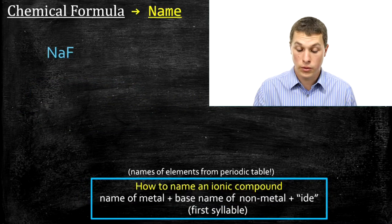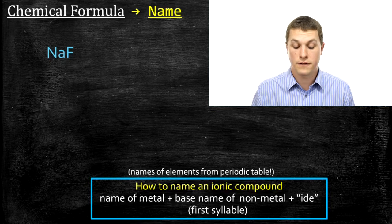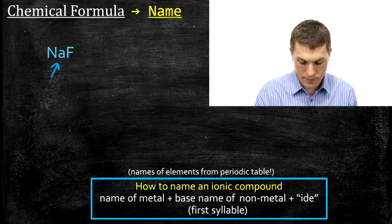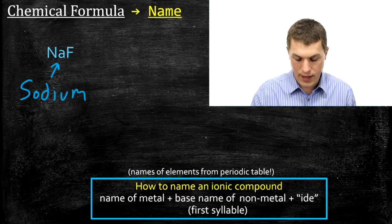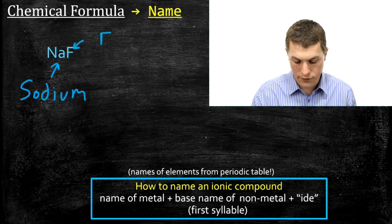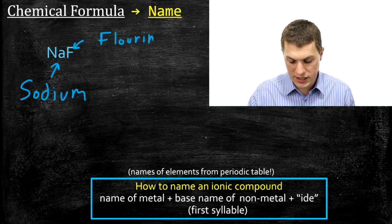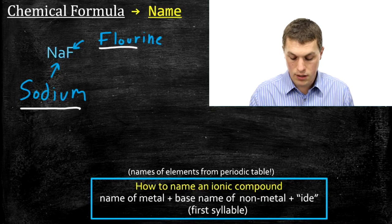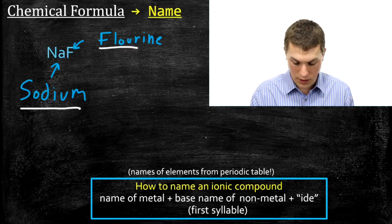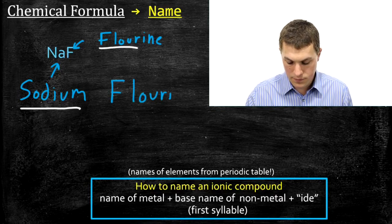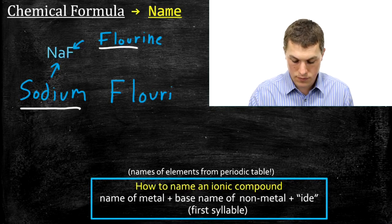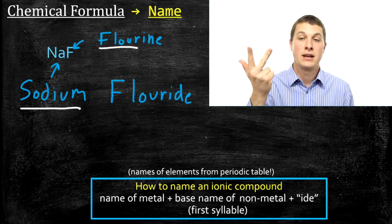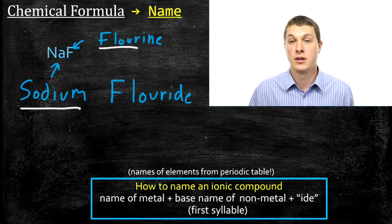Let's look at NaF. We go to the periodic table: Na is sodium, and F is fluorine. We write out the full name of the metal — sodium — then we keep the base name of the non-metal, fluorine, which is just 'fluor', dropping the 'ene'. The last thing we do is add 'ide'. So that's writing the name of the metal, then the base name of the non-metal, and adding 'ide' — giving us sodium fluoride.